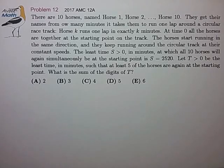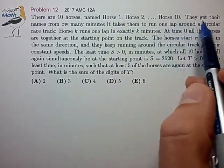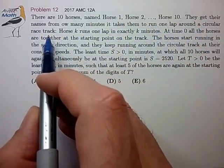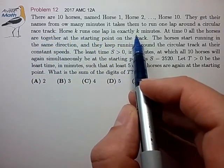Hi, this is problem 12 from the AMC 12A. There are 10 horses named 1 through 10, and they get their names from how many minutes it takes to run one lap around a circular track. Horse K runs one lap in exactly K minutes.